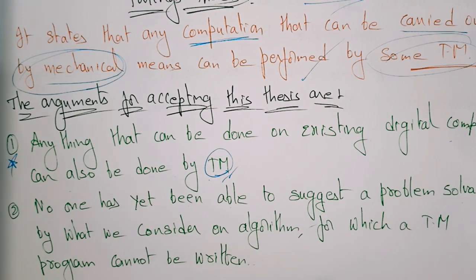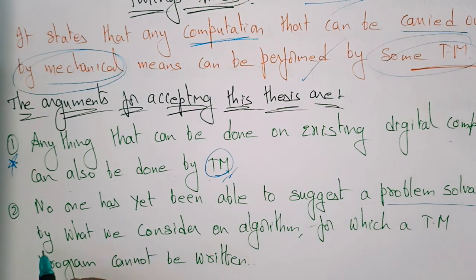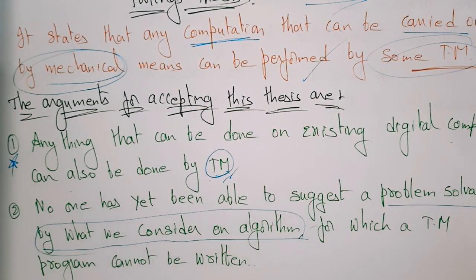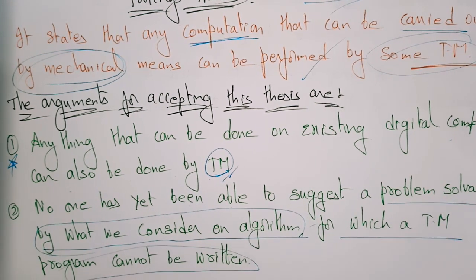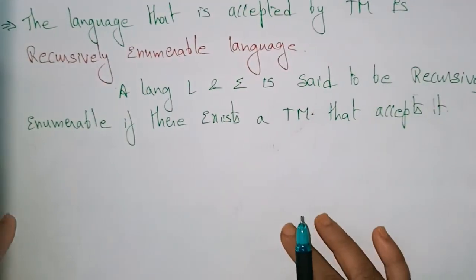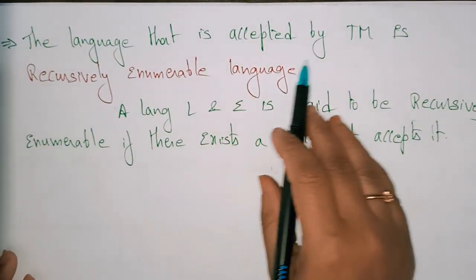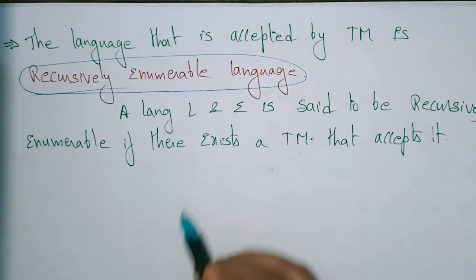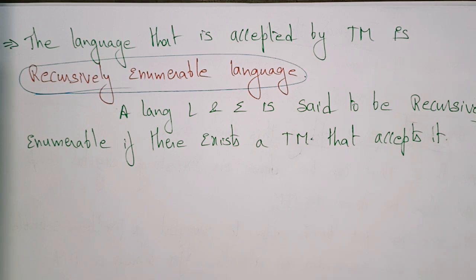No one has been able to suggest a problem that is solved by considering any algorithm for which a Turing machine program cannot be written. Another argument is that the language accepted by a Turing machine is a recursively enumerable language, as we already stated in the definition.